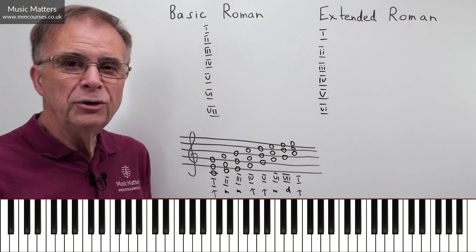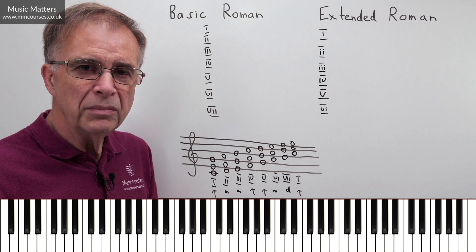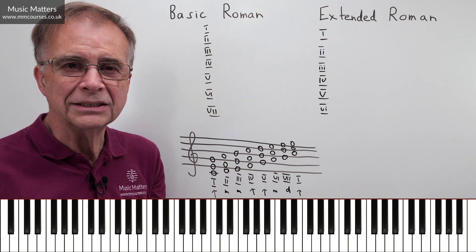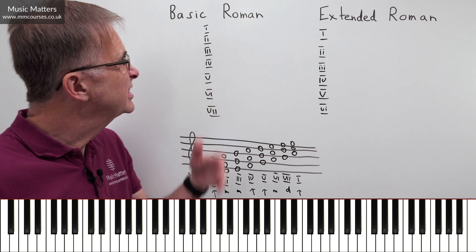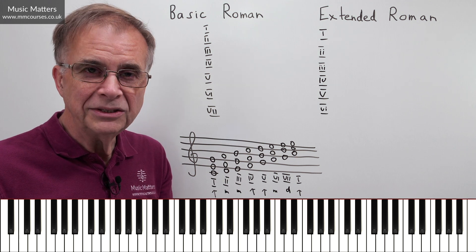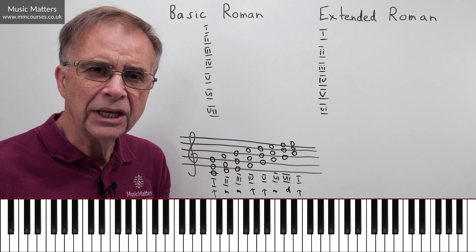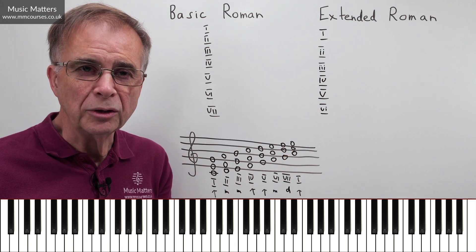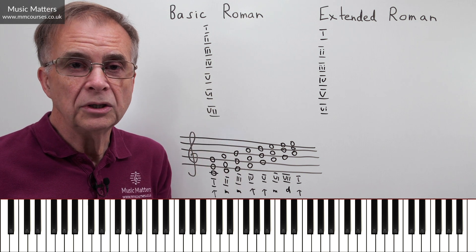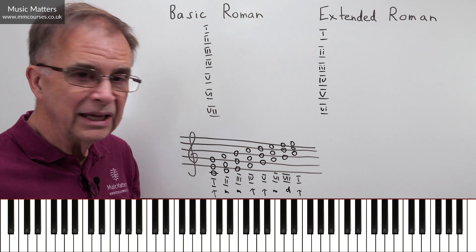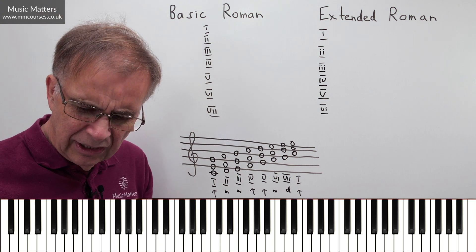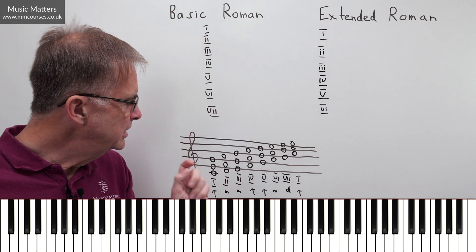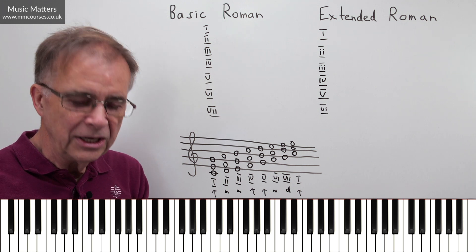We'll just leave VII for now. But that's the only difference. So if you want to sort out which are major chords and which are minor chords when you label your chords, use the extended Roman system. When it comes to harmonizing a melody or working out which chords are being used, there's nothing that really disadvantages you if you use basic Roman — you don't have to get bogged down in: am I using uppercase or lowercase? If you're preparing for an exam, there may be some exam systems that require extended Roman, but many are very happy with basic Roman.